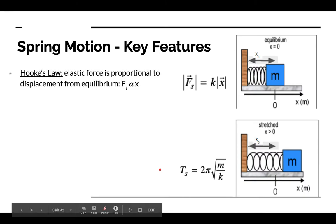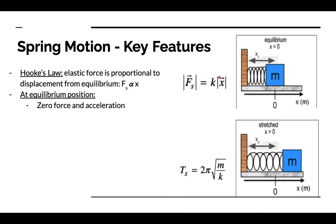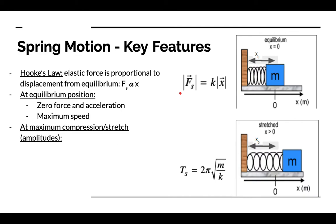Simple spring motion key features: Hooke's Law. The elastic force is proportional to displacement from equilibrium. Fs is proportional to X. The constant of proportionality K is what we call the spring constant. At the equilibrium position, we have zero force and zero acceleration, so at this point we are at our maximum speed — because we've reached a point where our acceleration has pushed us as much as it can without starting to pull us back.